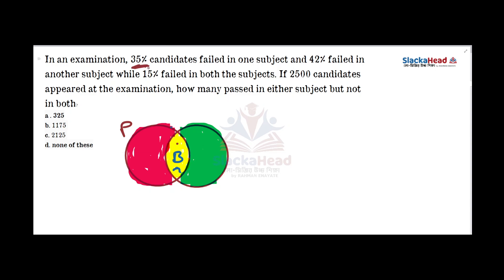In an examination, 35% of candidates failed in one subject and 42% failed in another subject, while 15% failed in both subjects. If 2500 candidates appeared at the examination, how many passed neither subject but not in both?